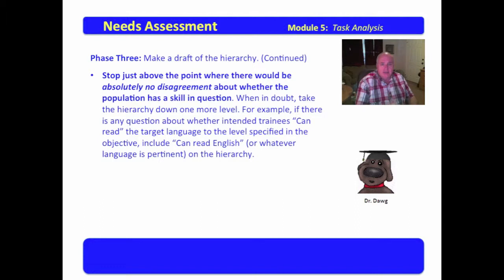Now, you make a draft of these things, and you stop just above the point where there would be absolutely no disagreement about whether the population has a skill in question. When in doubt, take the hierarchy down one more level. For example, if there's any question about whether intended trainees can read the target language to the level specified in the objective, include can read English or whatever language is pertinent to the hierarchy. So, you're not wanting to list all of those things that there's no debate that everyone could do, but you're wanting to identify those things that perhaps not everyone can do, and get your foundation and then move forward.